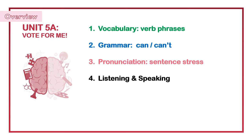We will start our lesson with an overview from Unit 5A: Vote for Me. We have different sections today: a vocabulary section about verb phrases, a grammar section about the structure can or can't. You will learn how to talk about your abilities, possibilities, and also permission. We have a pronunciation section where we focus on sentence stress, and the skills we focus on today are listening and speaking.